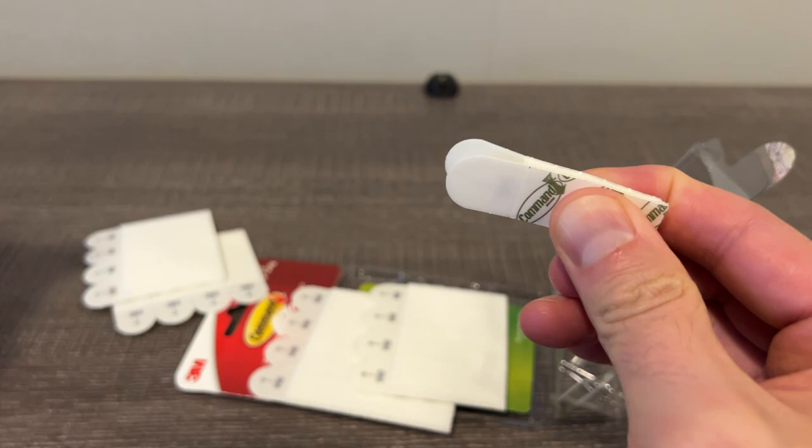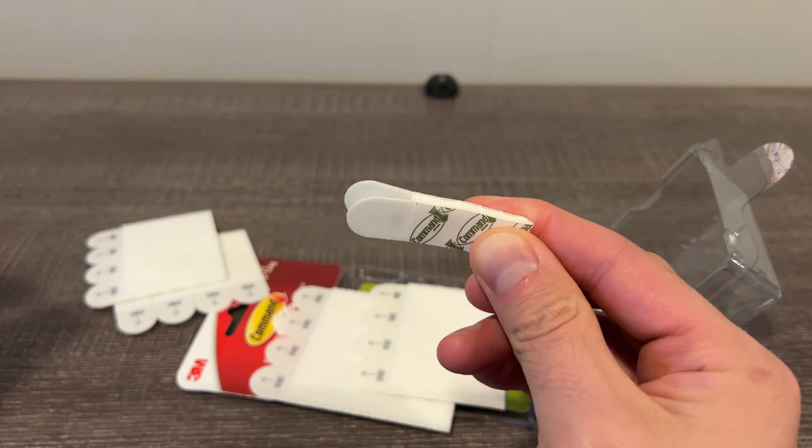And then the key to Command Hooks is when you want to remove it, you pull this tab and it stretches out. And as it stretches, it breaks the adhesive bond, so everything comes off nice and clean.